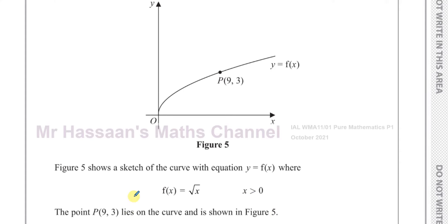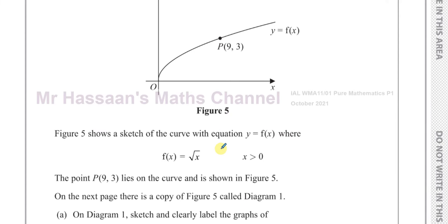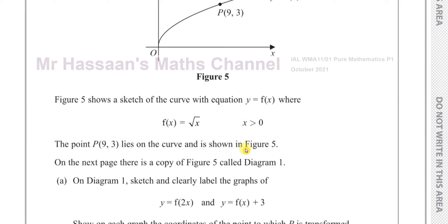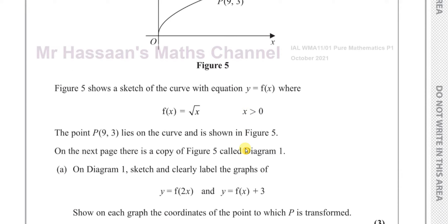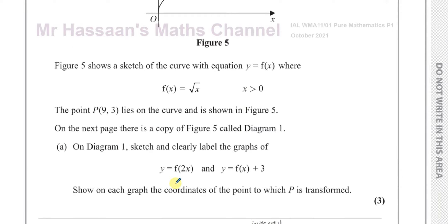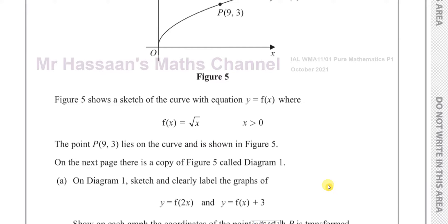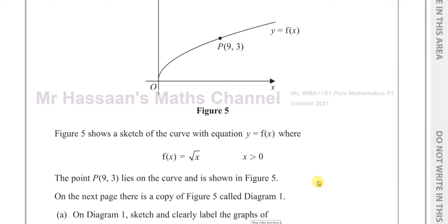The point P(9, 3) lies on the curve and is shown in figure 5. On the next page there is a copy of figure 5 called diagram 1. On diagram 1, sketch and clearly label the graphs of y equals f(2x) and y equals f(x) + 3. Show on each graph the coordinates of the points to which P is transformed.